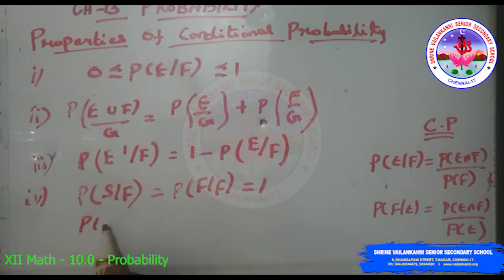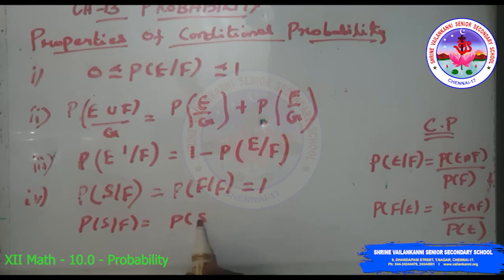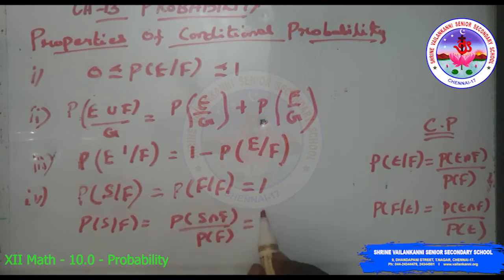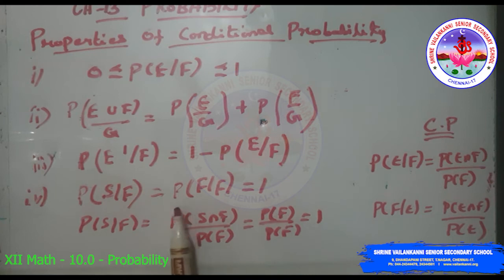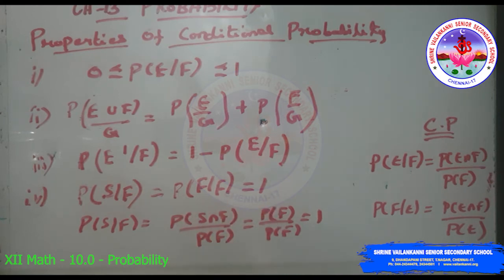P(S|F) = P(S∩F)/P(F) = P(F)/P(F) = 1. Similarly, P(F|F) = 1.